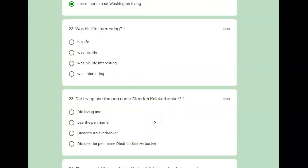22, was his life interesting? Who or what is the sentence about? His life. What about his life? Was interesting. This is when we have one of these helping verbs in front. Was interesting.